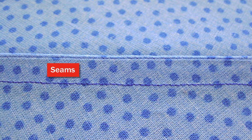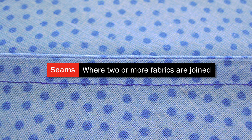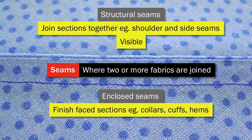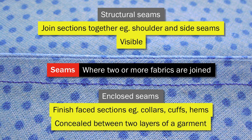Now we're going to move on to the result of stitch formations: seams. As we've seen, a seam is defined as a line where two or more fabrics are joined. There are two main uses for seams in garment construction. Structural seams join sections of a garment together, such as arms to a t-shirt, and are visible from inside the garment. Enclosed seams finish face sections of a garment and are concealed between the two layers of fabric. These are used in cuffs, waistbands and hems.